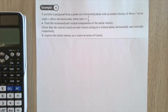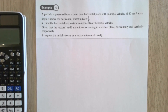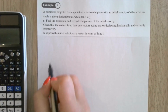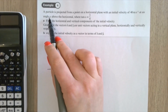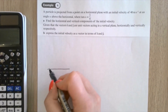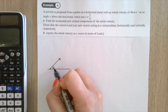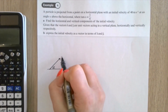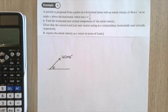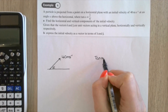We've looked at horizontal projection. The next two examples involve projection at an angle. Example 4: a particle is projected from a point on a horizontal plane with initial velocity 40 m/s at angle θ above the horizontal, where tan θ = 3/4. Drawing a diagram with horizontal and angle α.